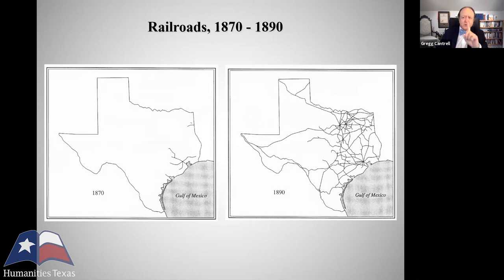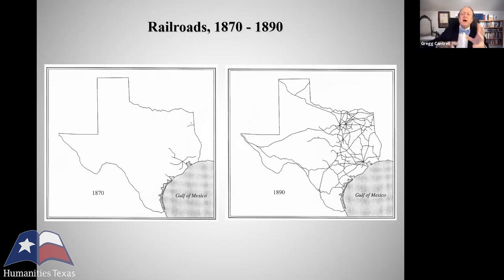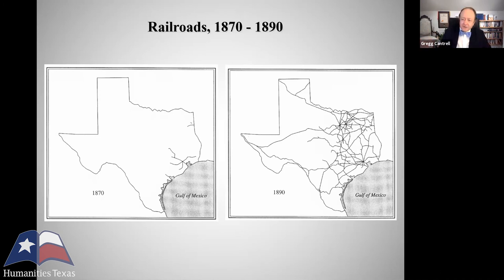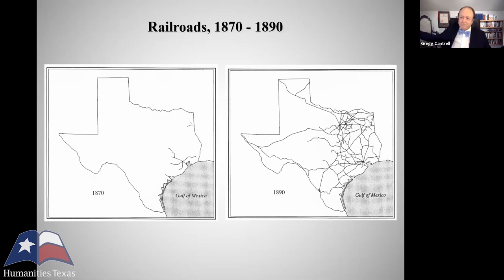You can see here before and after pictures from 1870 and 1890. Just in that 20-year period, you see the remarkable expansion of Texas railroad connections tying together all of the cotton-raising and agricultural parts of the eastern half of Texas — the settled parts of Texas — and those connections enabled Texas to be connected by rail to all the major population centers of the east and north.